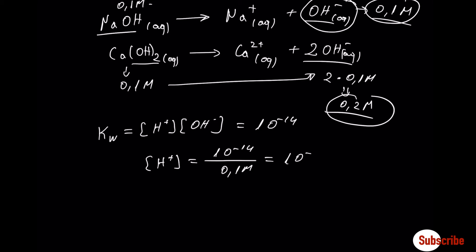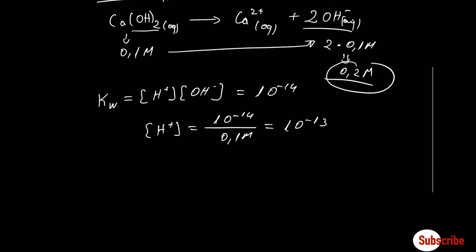In this case, it's 10 to minus 13, which means that pH is equal to minus logarithm of H+ ions or minus logarithm of 10 to minus 13, which means the pH of sodium hydroxide is 13.